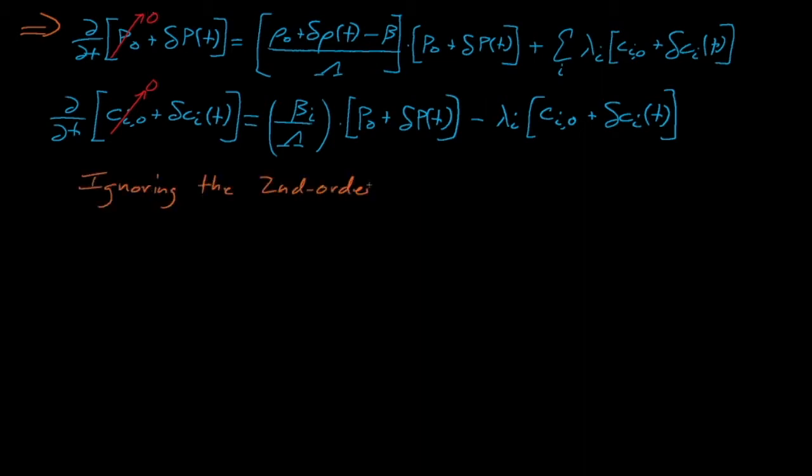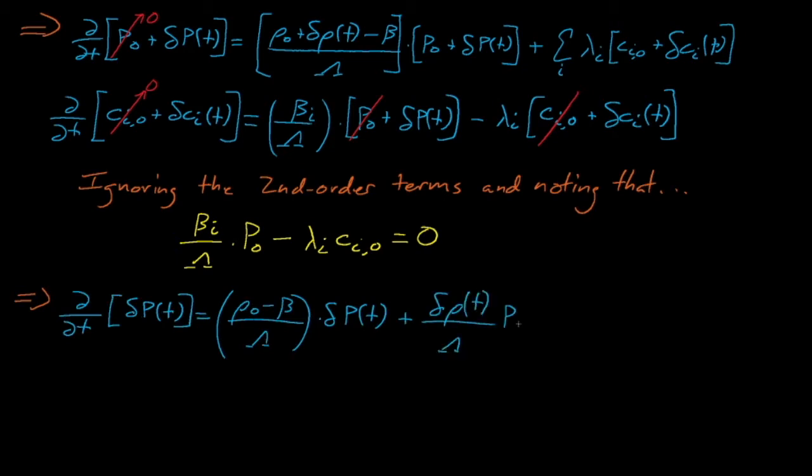Next, we'll ignore the second-order terms and recall that beta of I divided by lambda times P-naught minus lambda I times C-naught is equal to zero, since we assume that the rate of change of the delayed neutron precursor concentration is zero at the start of the transient. After doing this, we arrive at these simultaneous equations.